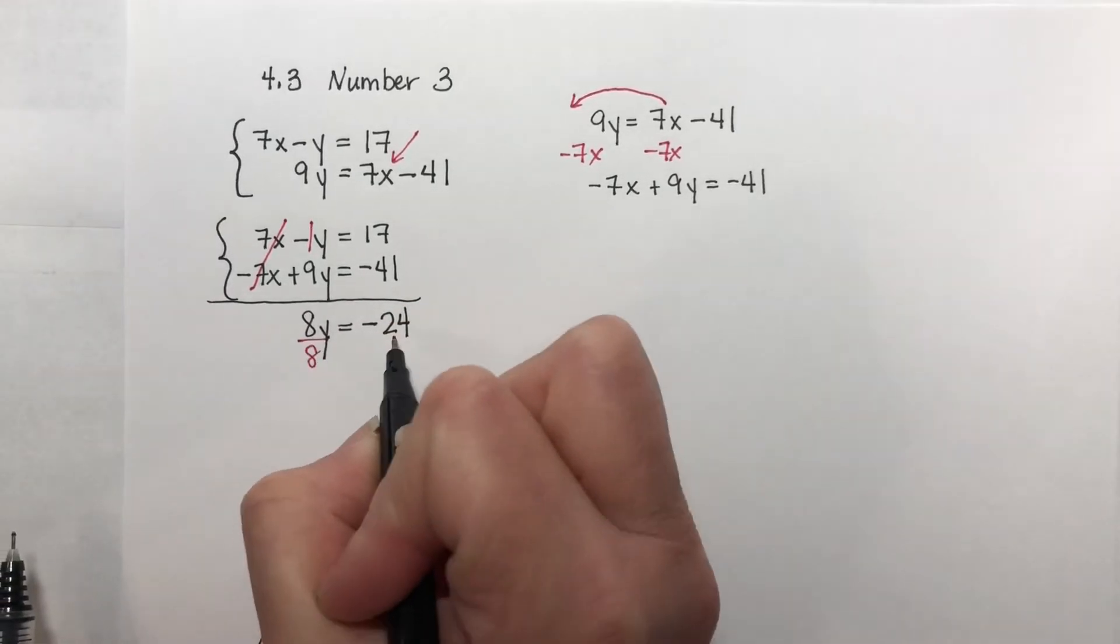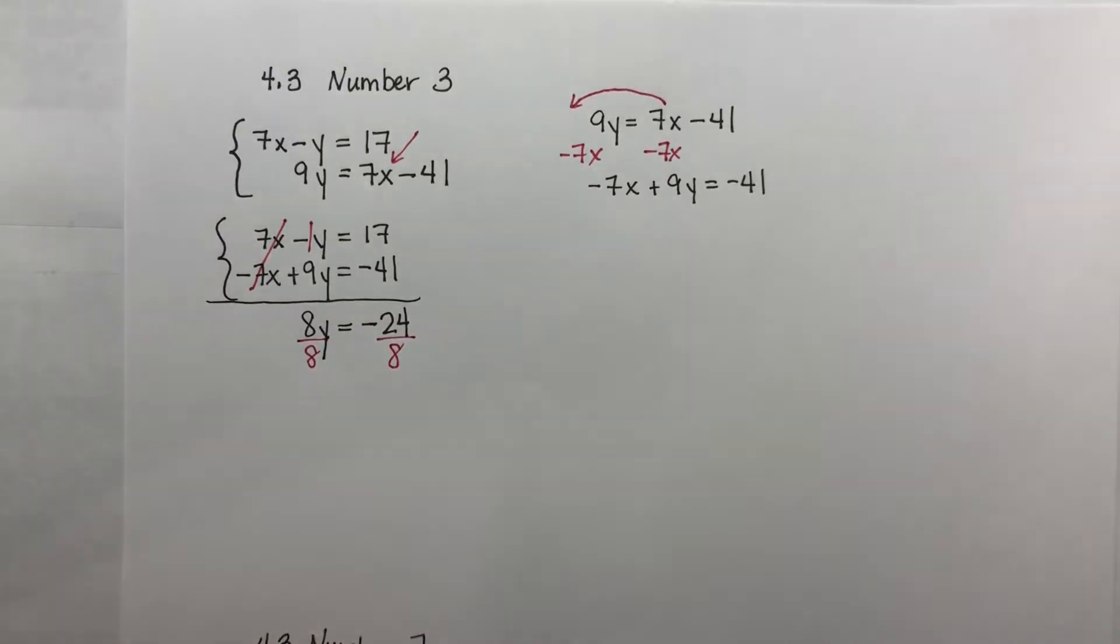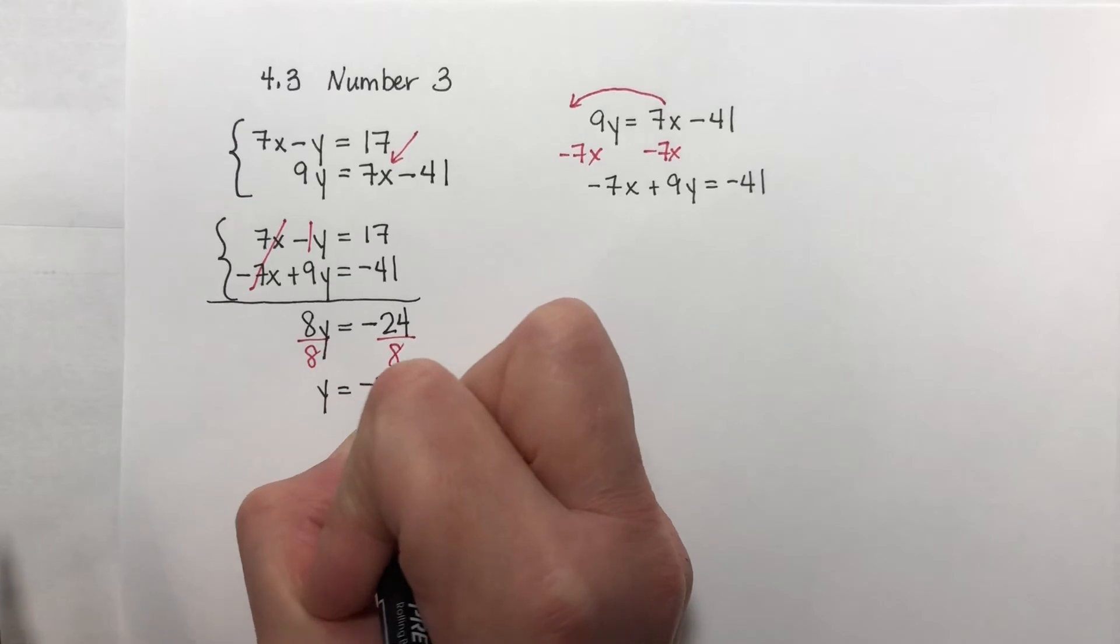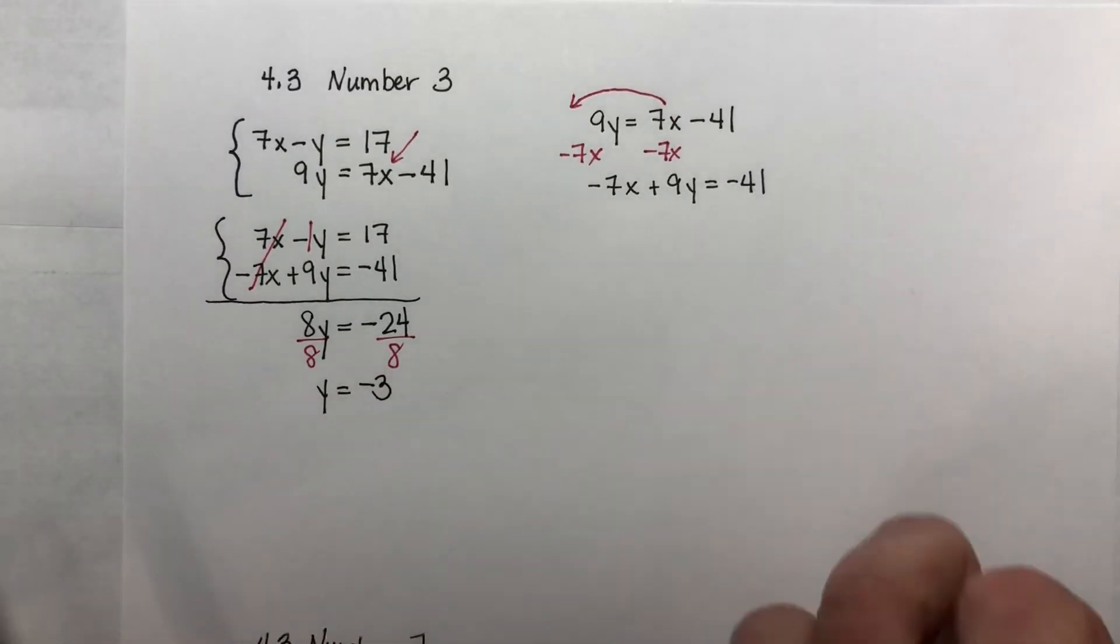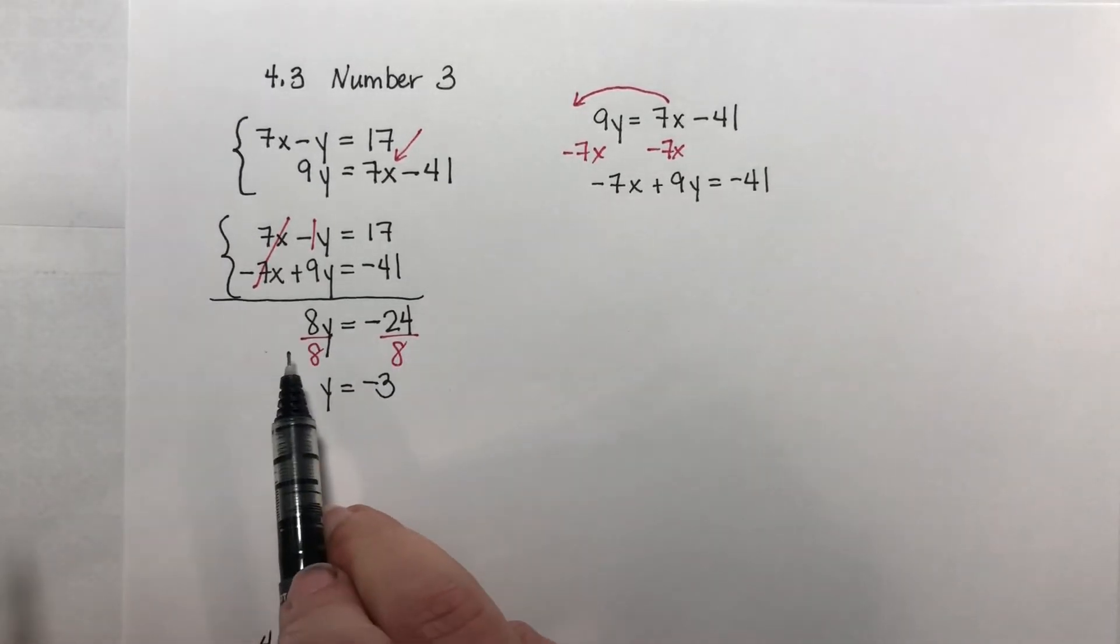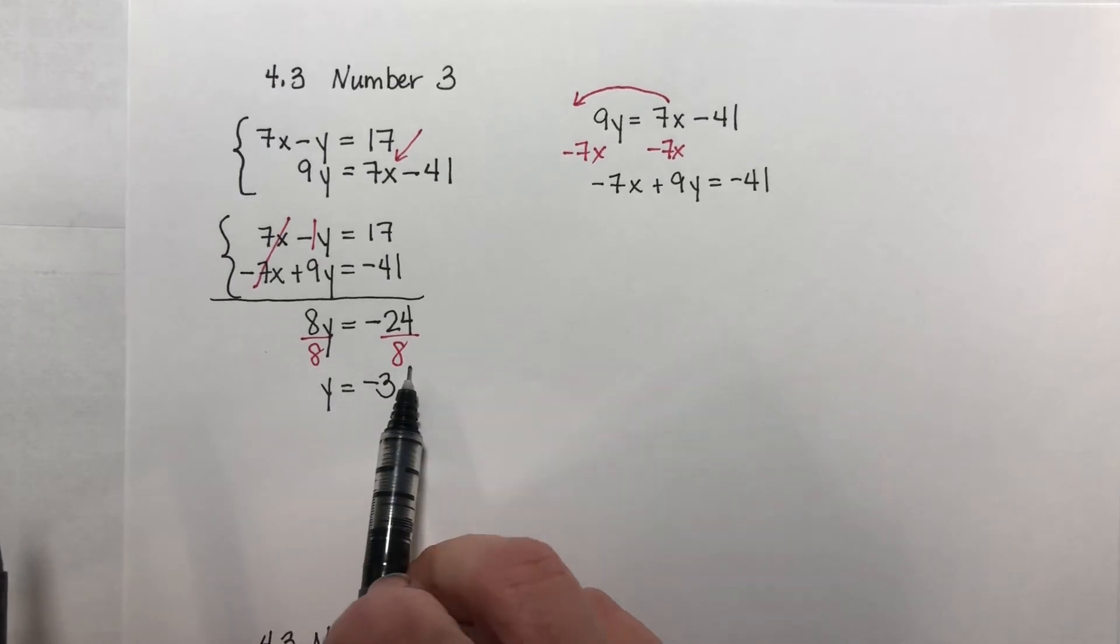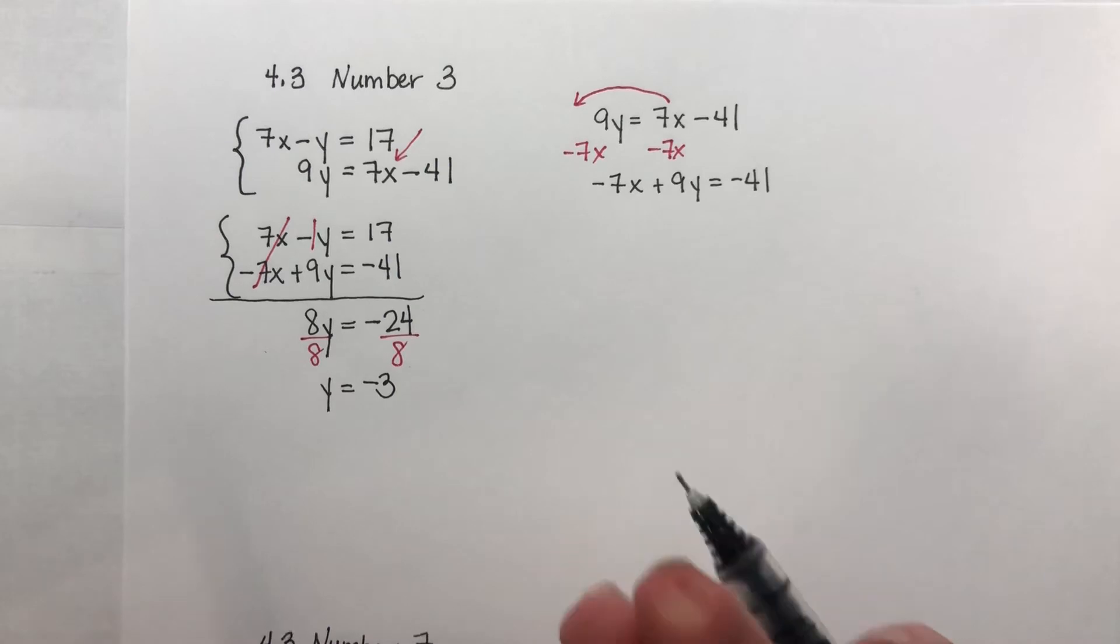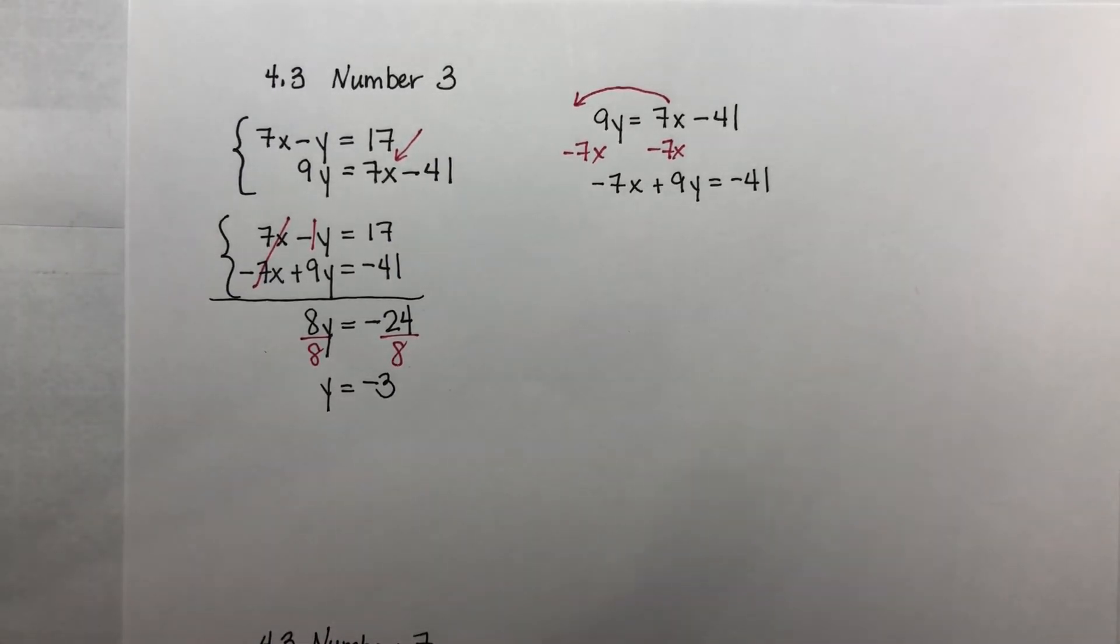Now divide both sides by 8. And you should get y is equal to negative 3. If you are getting fractions when you know you shouldn't be, if that's the mistake that you see you're making every time, one of the first places you should check is to make sure that you're dividing in the correct order here. A common mistake is instead of dividing both sides by 8, students will divide both sides by negative 24. That's going to just give you a fraction instead of a whole number that you need. So that's a place you should check first.